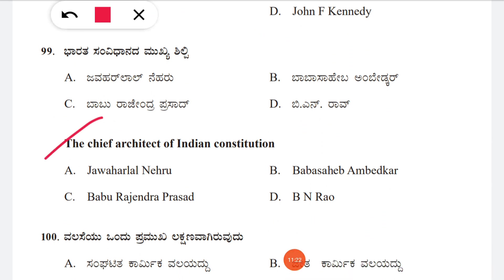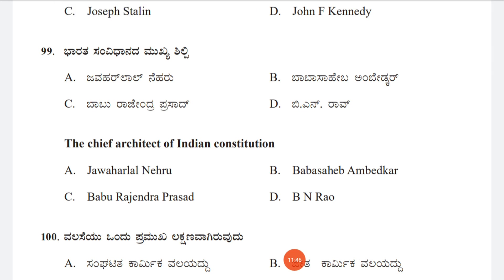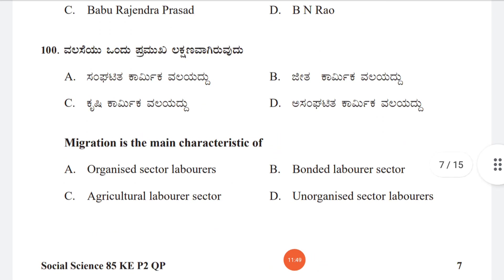Question 99: The chief architect of the Indian Constitution — option A: Jawaharlal Nehru, B: Babasaheb Ambedkar (Dr. B.R. Ambedkar), C: Babu Rajendra Prasad, D: B.N. Rao. The correct answer is B, Babasaheb Ambedkar. This question was also asked in the first model question paper.